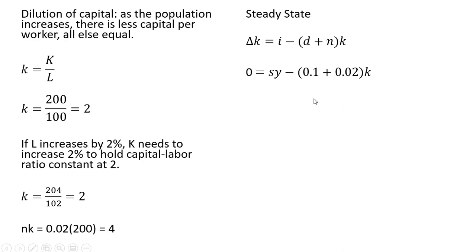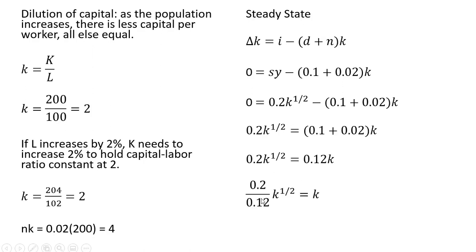So plugging those values in: 0 = sy - (0.1 + 0.02)k. Plugging 0.2 in for s and then the per worker production function in for y, and now we're going to solve this equation for k.